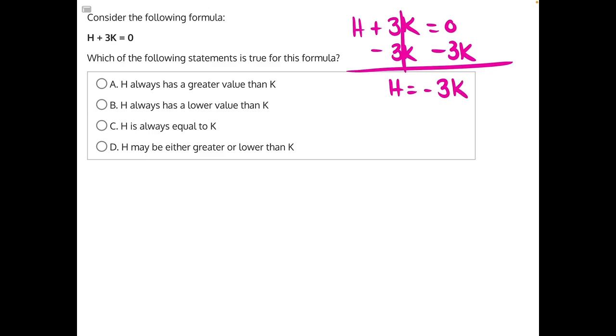From here, we can plug in different values for h and try to find our correct answer. Let's do negative 3 and positive 3 for h. So we will have two different formulas. We will have h is equal to negative 3k, and we will plug in those two different values for h. So we'll have 3 is equal to negative 3k, and then we will have negative 3 is equal to negative 3k.